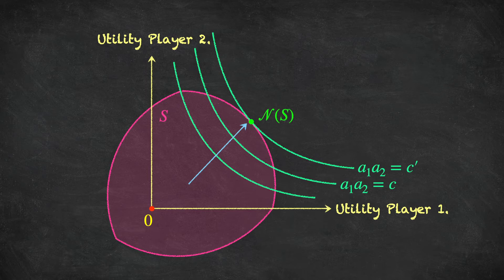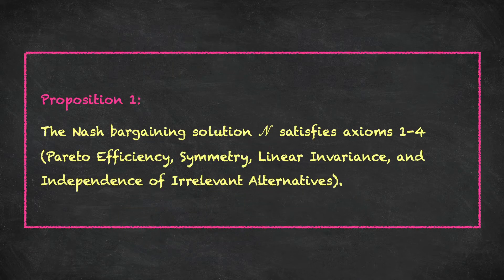Upon first sight of this, the idea of choosing an alternative to maximize the product of utilities seems a rather strange thing to do. Why are we multiplying utility numbers together? Well, the first proposition is that if we choose to use the bargaining solution proposed by Nash, then we can guarantee that we're using a solution concept that satisfies the four axioms we studied in the previous video.